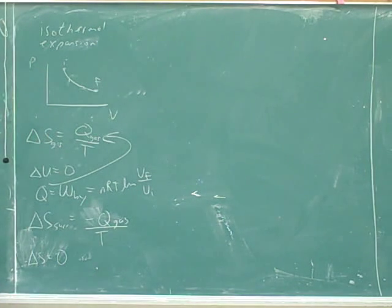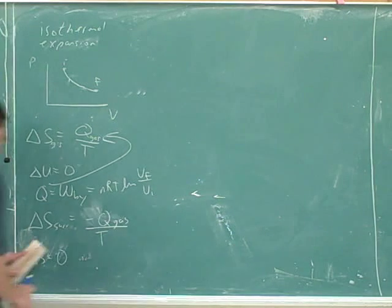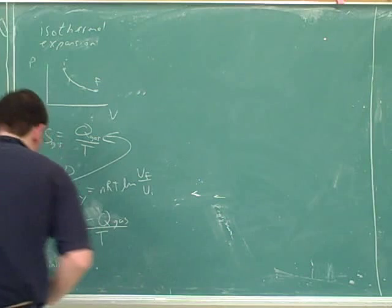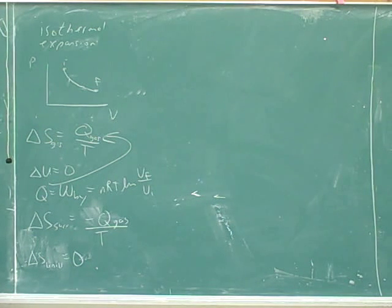Now, according to the second law of thermodynamics, when is delta S for the universe equal to zero? Remember that we said that usually the entropy of the universe increases. So how is it possible here that the entropy of the universe is not changing? When can that happen? You might want to take another look at what the handout says about our second law of thermodynamics. So here's what the second law tells us.